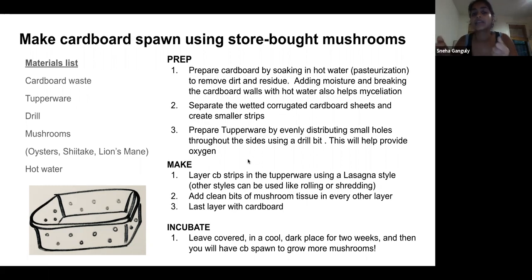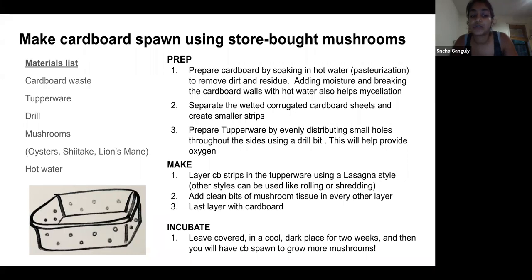Using corrugated cardboard is recommended because it creates channels for air to pass through. Cut the larger cardboard sheets into strips small enough to fit inside your Tupperware container. Also, take your Tupperware and with a drill bit, distribute small holes throughout the body of the container — I usually don't poke holes at the top or bottom. The holes are there so the mushroom mycelium can breathe and there's fresh air exchange as the spawn grows inside.